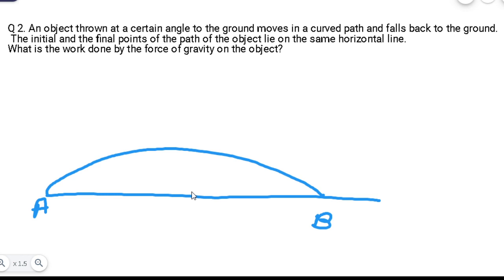A to B आपका displacement है. Displacement कैसे निकालते हैं - we have to only look at the initial point and the final point. Initial point A है, और final point B है. तो आपका जो displacement है, वो straight line A to B हो गया.